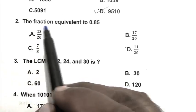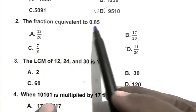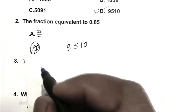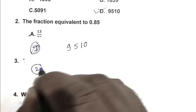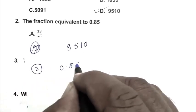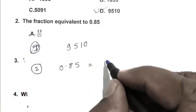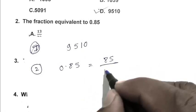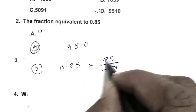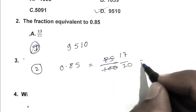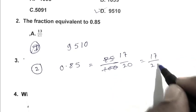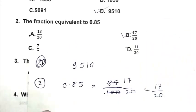Question number 2. The fraction equivalent to 0.85. So friend, we write the fraction that is 0.85, eliminating the point we get 85 upon 100. 5 times, that is 17 upon 20. So friend, B is the right answer.